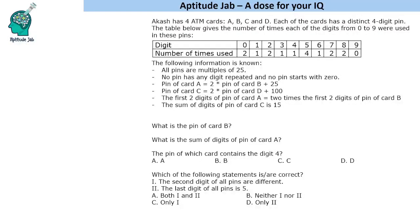Hello everyone, welcome to Aptitude Lab. This question says that a person has four ATM cards A, B, C, and D, and each card has a four-digit PIN. The table gives the number of times each digit from zero to nine was used in these PINs. There are four ATM cards with four-digit PINs, so four times four equals sixteen digits total. The digit frequency counts given are: 2, 3, 5, 6, 7, 11, 14, 15, 16.